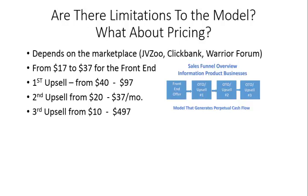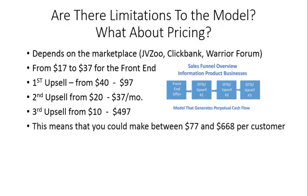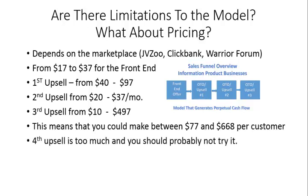Your buyer has now seen four offers — three upsells. In this scenario you could make between $77 and $668 per customer, depending on where your pricing is. That's significant, because your pricing really moves your buyer through your marketing funnel and gives them the opportunity to get extreme value out of the entire purchase. You've created a system for them to buy your product, use it, and get started quickly.